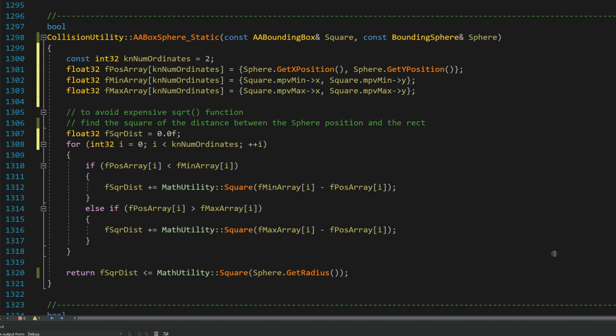We store the sphere's position and the min and max vectors inside arrays so we can use them in a for loop. If the ordinate of the sphere is less than the ordinate of the minimum array, then it must be closer to the minimum value than the maximum value. So we calculate the square of the differential using the minimum; otherwise we use the maximum ordinate.